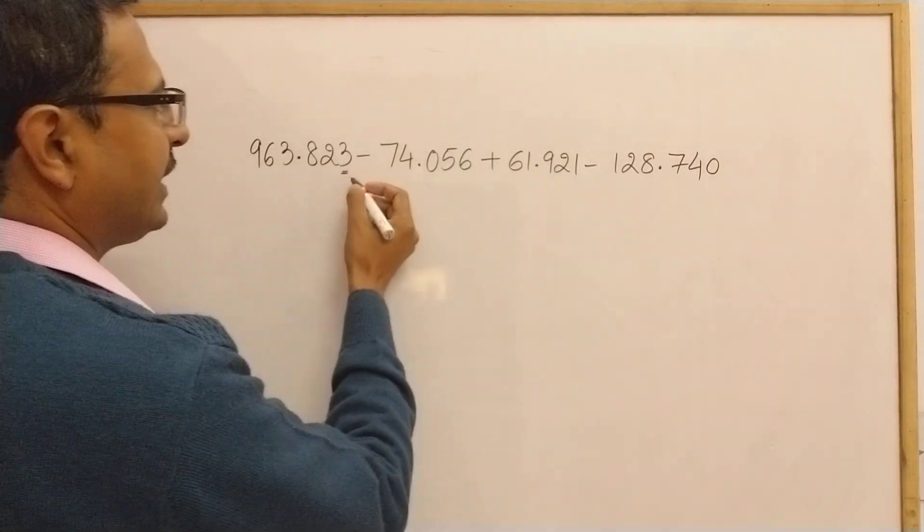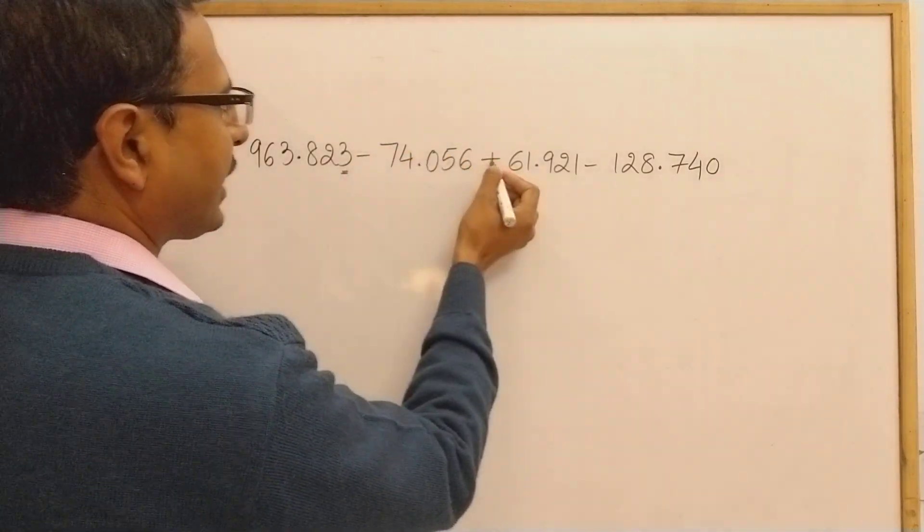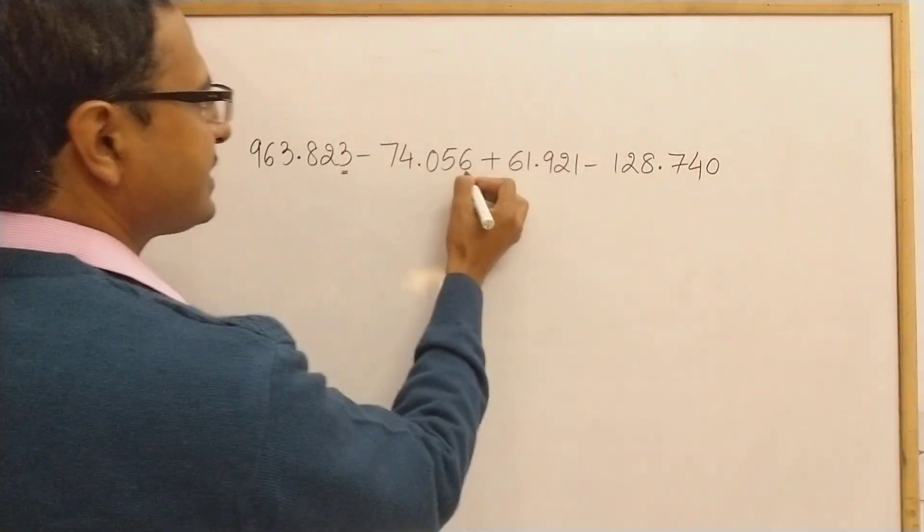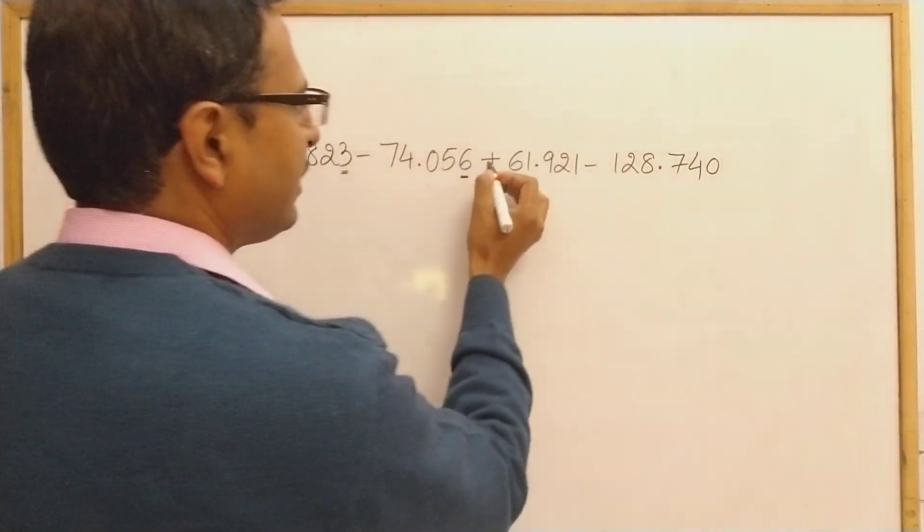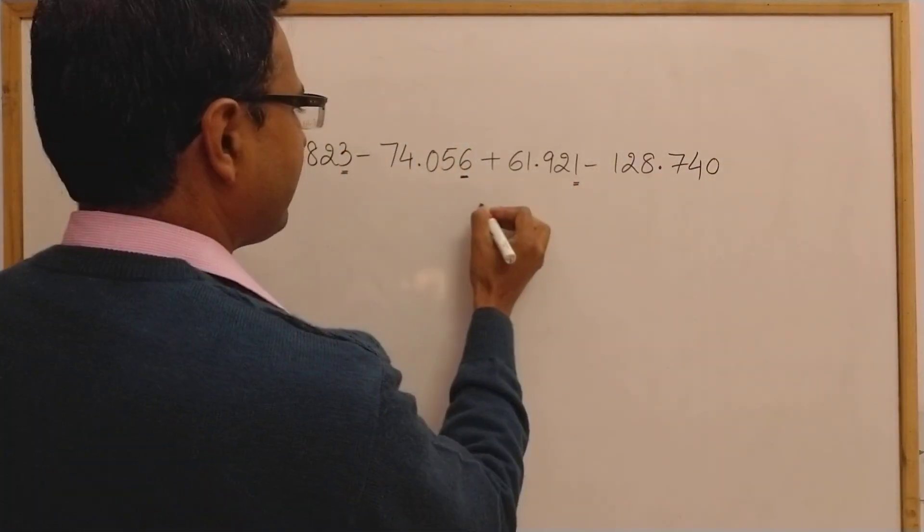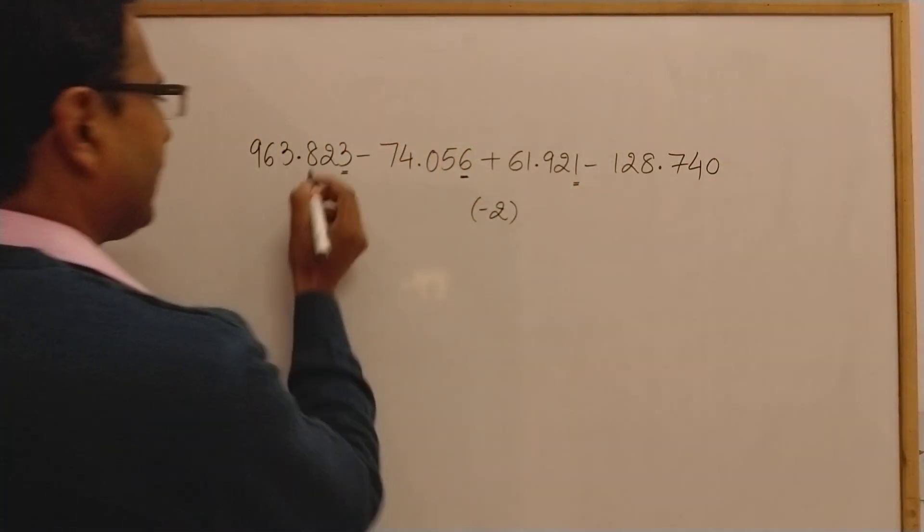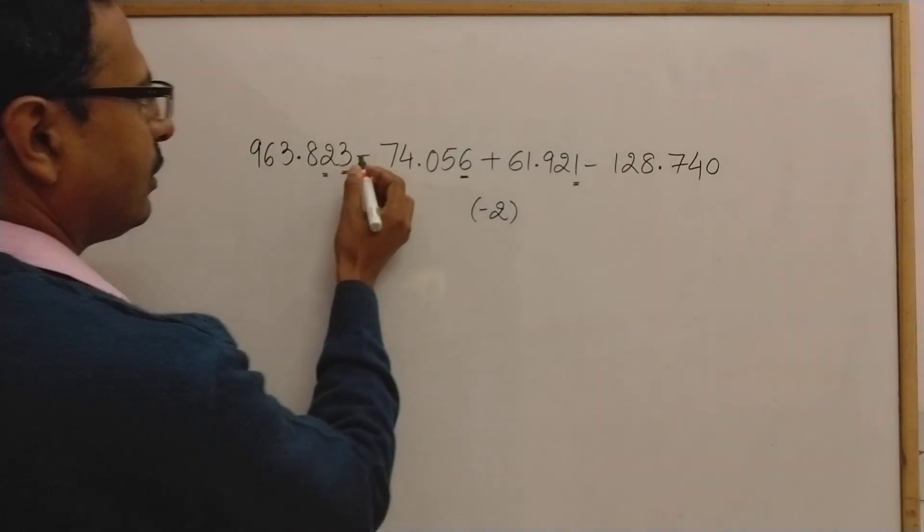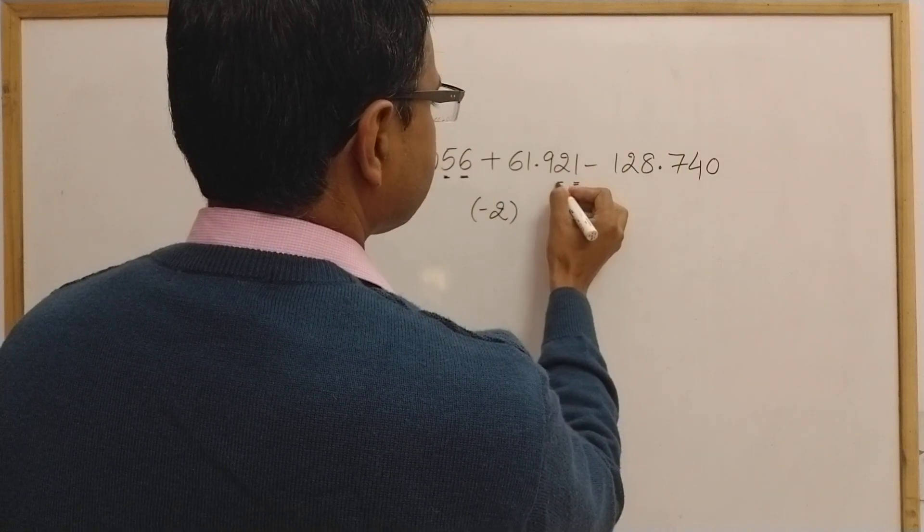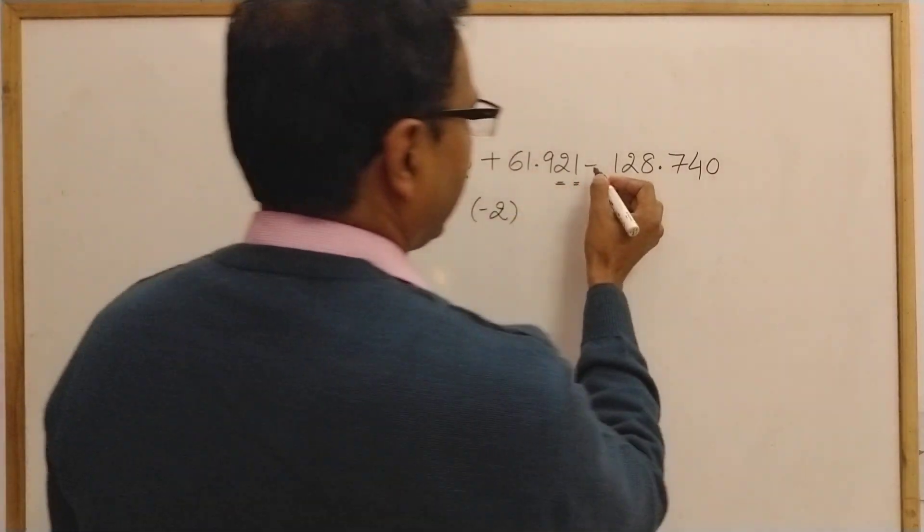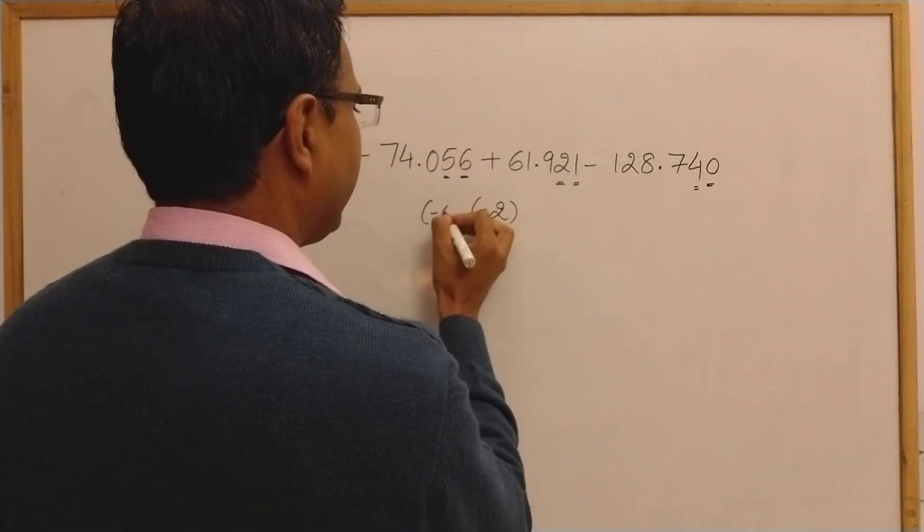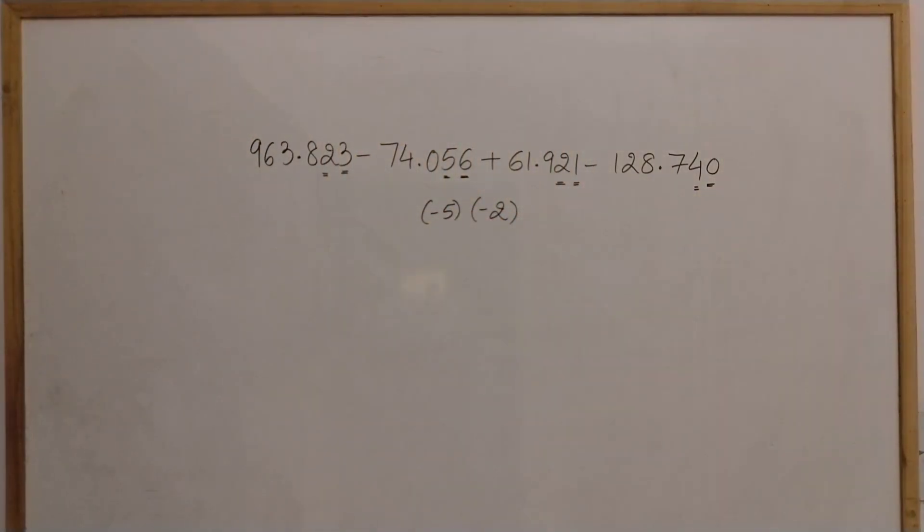So three minus six is minus three plus one is minus two minus zero, so we have a minus two. Then come to the next digit. This is two minus five, two minus five is minus three, minus three plus two is minus one, and minus one minus four is minus five. So likewise we have to carry on with the numbers like this.